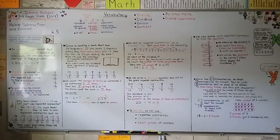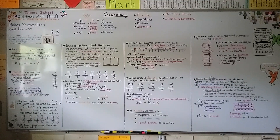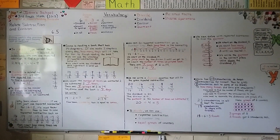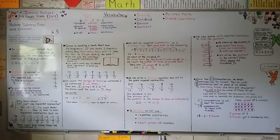Even though it's quicker to use division, if we get stuck we can use repeated subtraction to help solve a division problem. We can also use a number line and jump back by the divisor, or draw equal groups with counters until we use all the counters equal to the dividend. We're going to continue talking about division. Have a really nice day, and I'll see you next time. Bye.